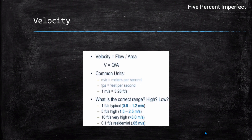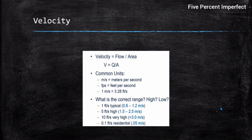Velocity is the speed at which water flows along a pipeline. It is defined by the equation V = Q/A, where Q is the flow and A is the cross-sectional area through which the discharge is flowing. The unit of velocity for water flow should generally be in meters per second — not kilometers per hour or miles per hour.